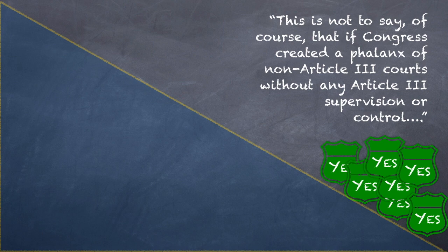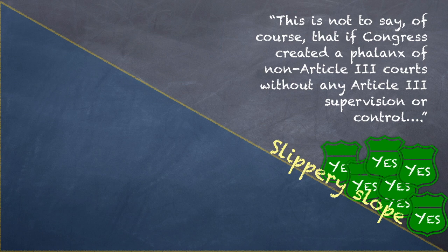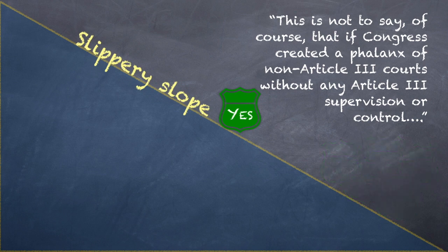One caveat. The court in Shure acknowledged a valid separation of powers concern when it added that this is not to say that if Congress created a phalanx of non-Article III courts without any Article III supervision or control, that would be acceptable. The Shure court rejected the dissent's worry that allowing agency adjudication was a step onto a slippery slope. The court distinguished specialized matters decided in FIFRA arbitrations and CEA broker-customer disputes from the open-ended jurisdiction Congress tried to give the bankruptcy courts, which might wrap up a whole slew of diverse private law claims by and against the party in bankruptcy. Convenience is not enough to guarantee constitutionality.